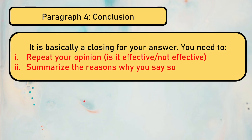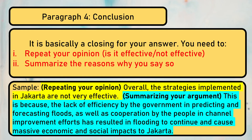A conclusion is basically a closing for your answer. You need to repeat your opinion — if at the start you said it's effective or not effective, say the same thing; do not say the opposite or you'll be contradicting yourself. Then summarize the reasons from your body paragraphs. For example: 'Overall, the strategies implemented in Jakarta are not very effective because of the lack of government efficiency in predicting floods and the lack of cooperation by people in channel improvement efforts, and floods continue causing massive economic and social impacts in Jakarta.'